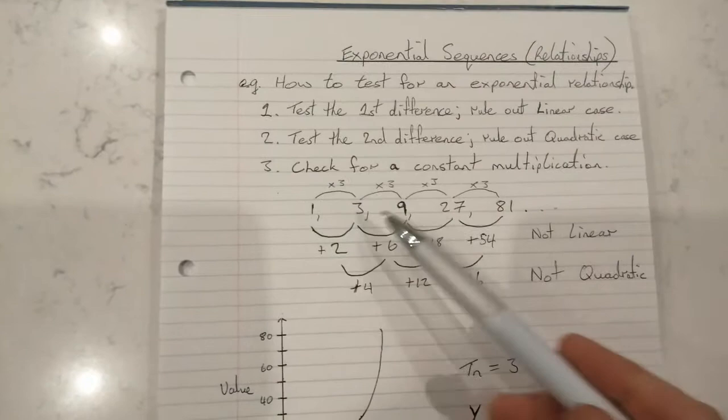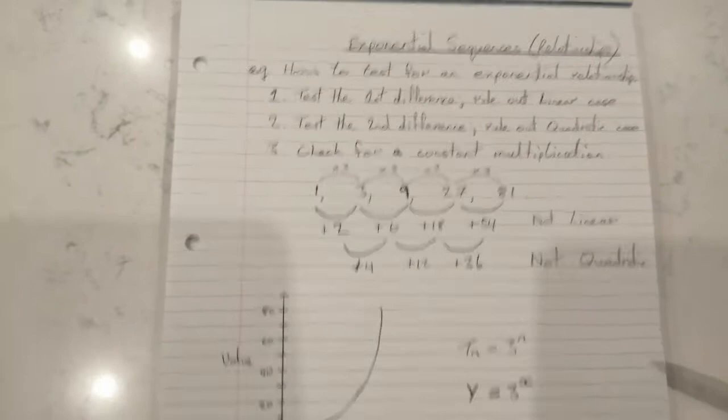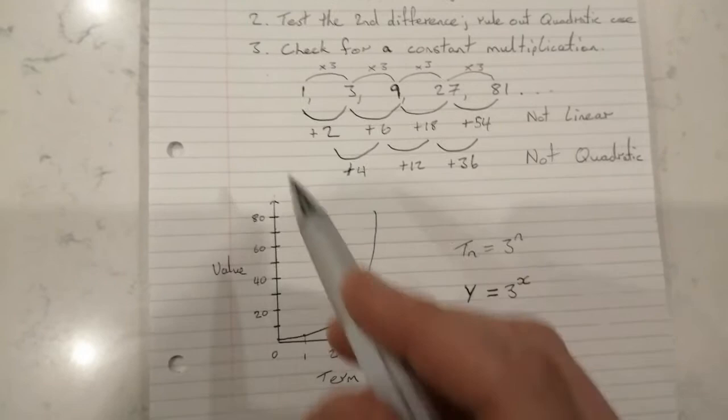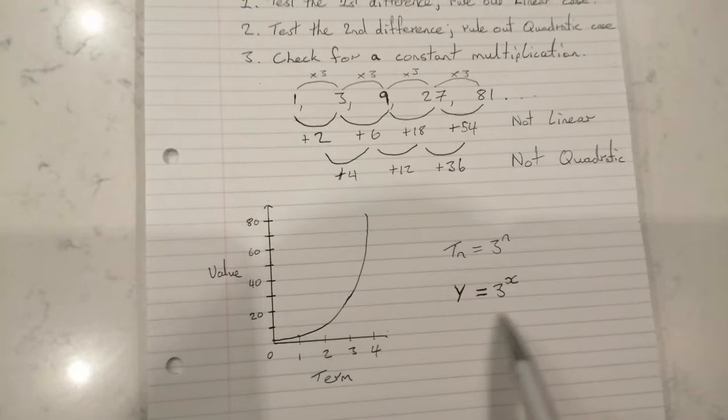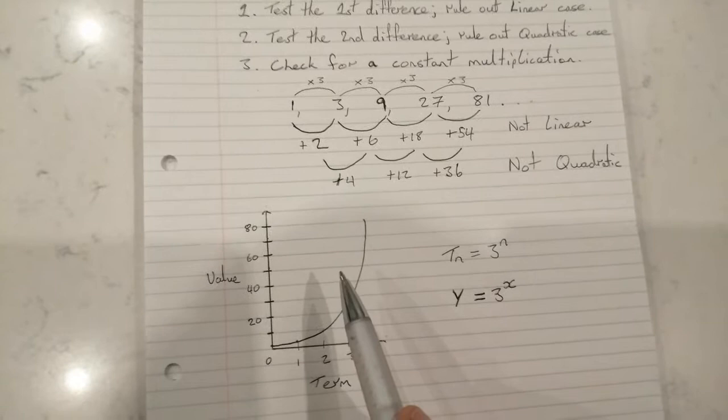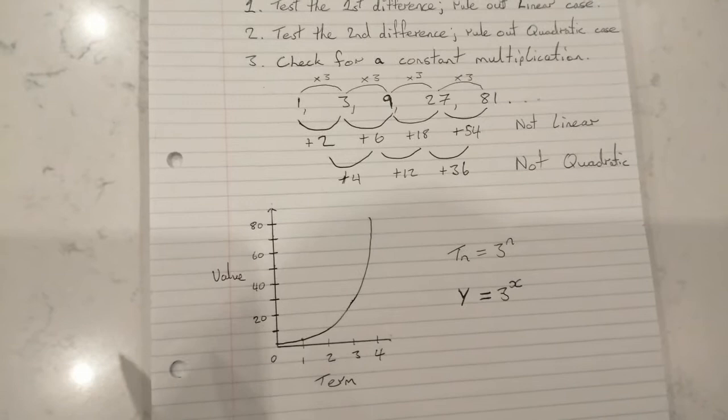So this is an exponential sequence. How we would graph that then is the exact same way as we'd graph other sequences. What tends to be more useful, though, with exponential sequences is we don't really use this term n notation so much with these relationships. We tend to use this kind of notation. We don't have a way of finding term n of an exponential sequence the way we had for both the linear and the quadratic.